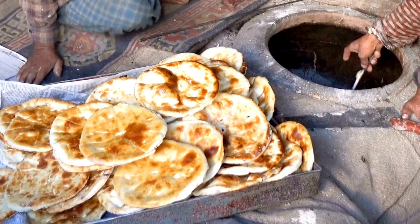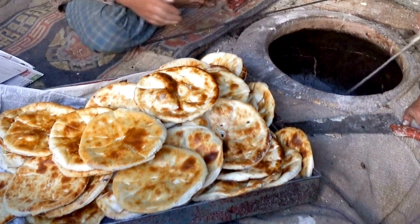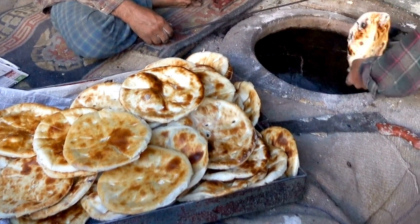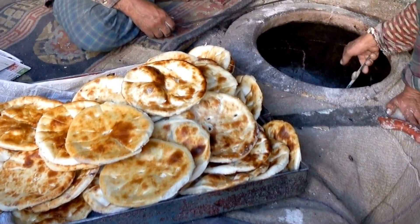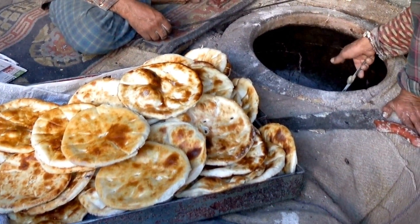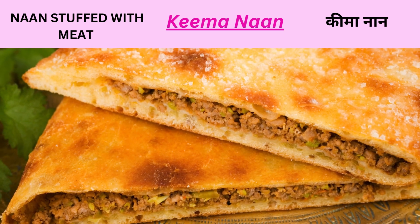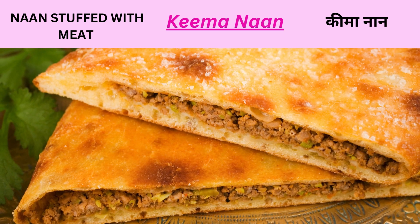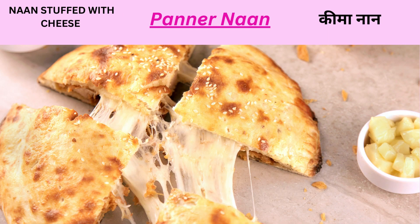Oven-baked bread made with all-purpose flour is known as Tandoori Naan. Naan that is stuffed with meat is known as Kheema Naan. Naan that is stuffed with cheese is known as Paneer Naan.